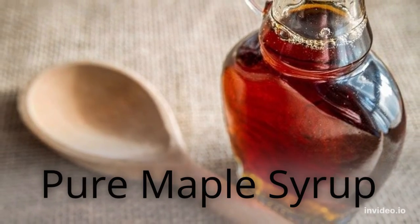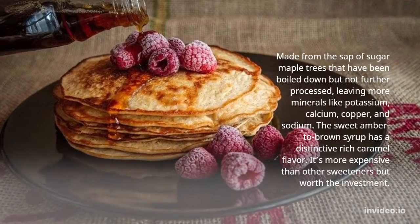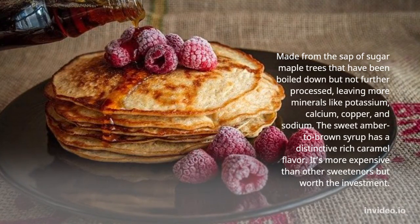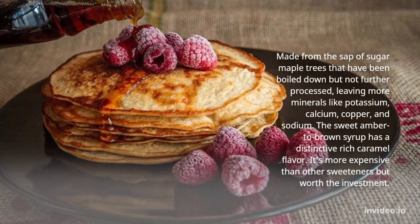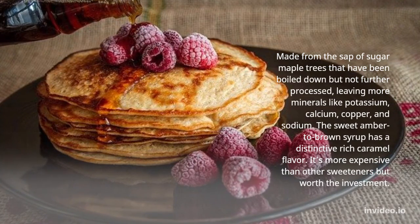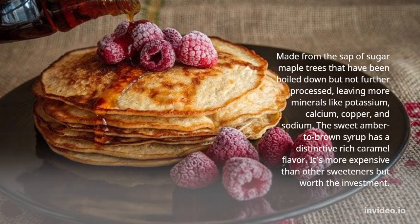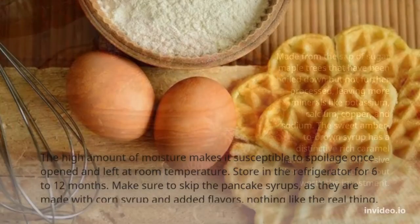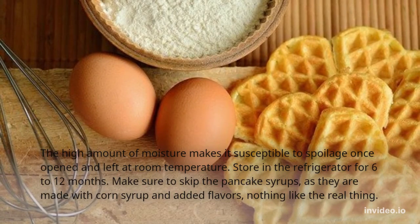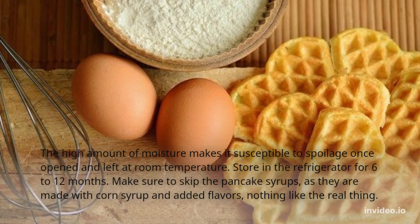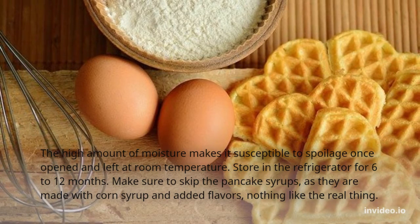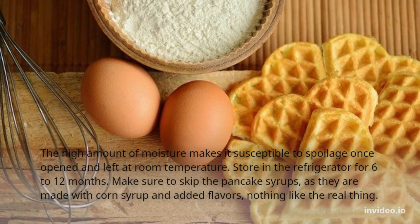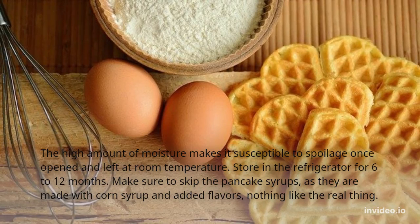Pure maple syrup. Made from the sap of sugar maple trees that have been boiled down but not further processed, leaving more minerals like potassium, calcium, copper, and sodium. The sweet amber to brown syrup has a distinctive rich caramel flavor. It's more expensive than other sweeteners but worth the investment. The high amount of moisture makes it susceptible to spoilage once opened and left at room temperature, so store in the refrigerator for 6 to 12 months. Make sure to skip the pancake syrups, as they are made with corn syrup and added flavors — nothing like the real thing.